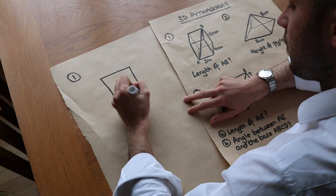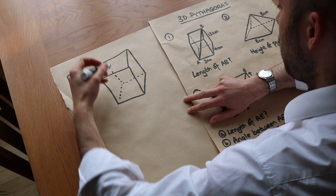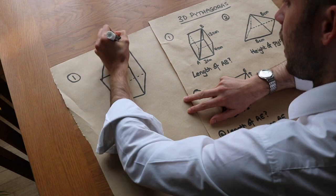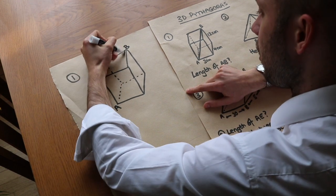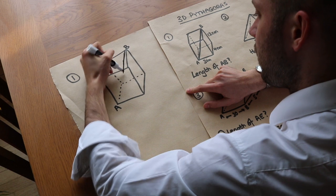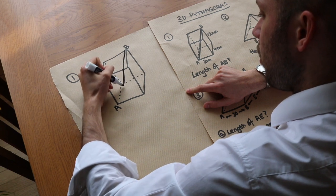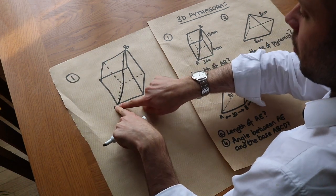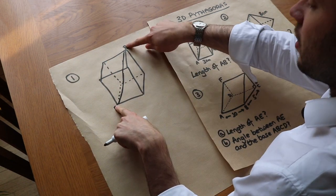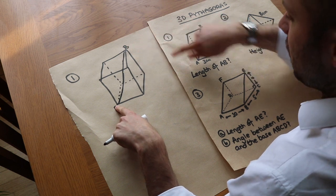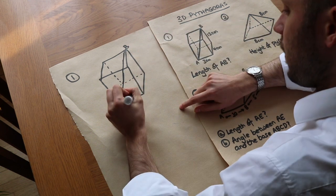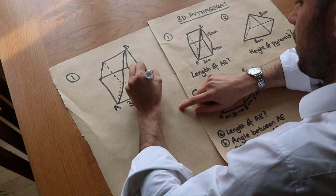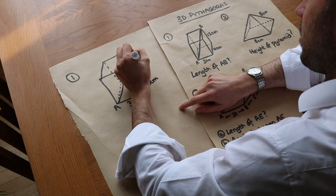If I copy out this cuboid, we want to find the length AB — this long line going from one corner of the cuboid to the opposite corner. The dimensions we've got are 3 centimeters, 4 centimeters, and 12 centimeters.